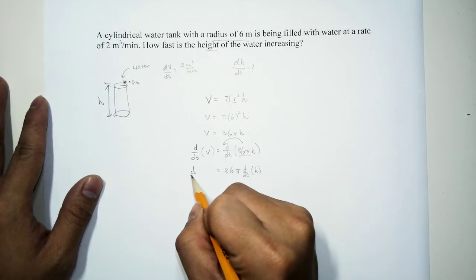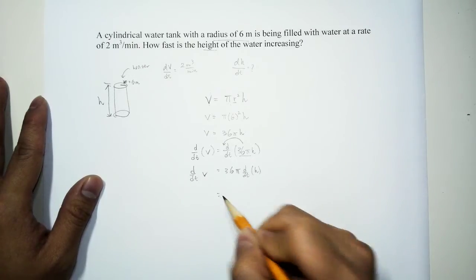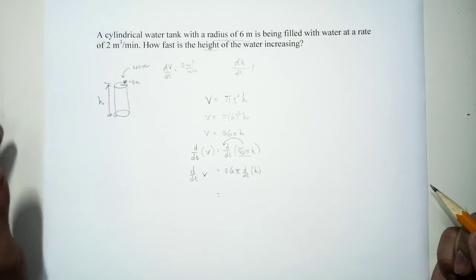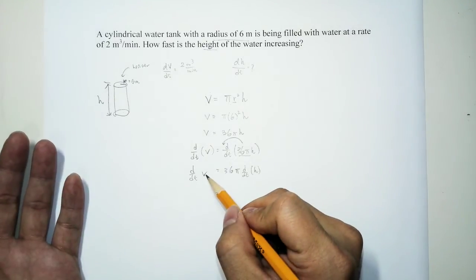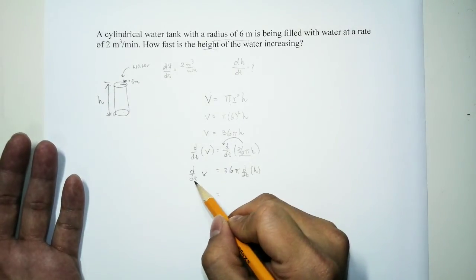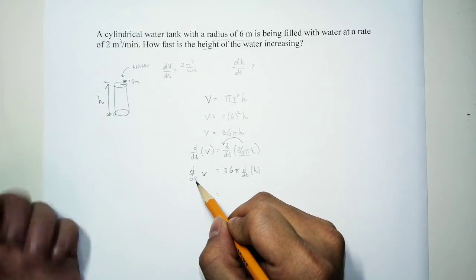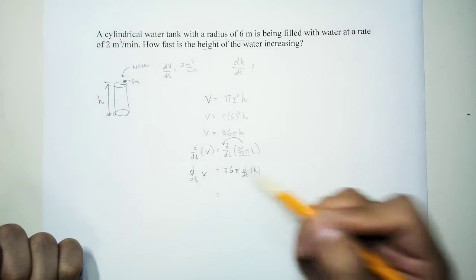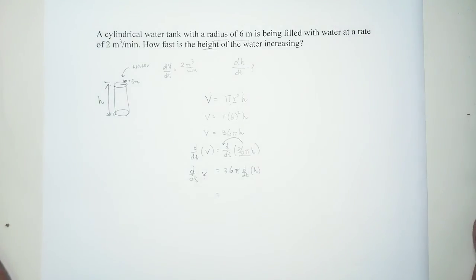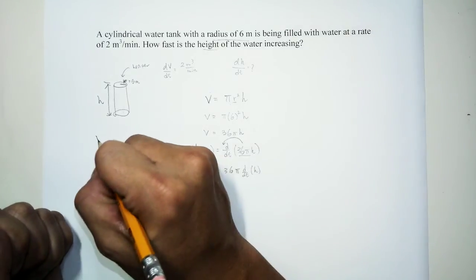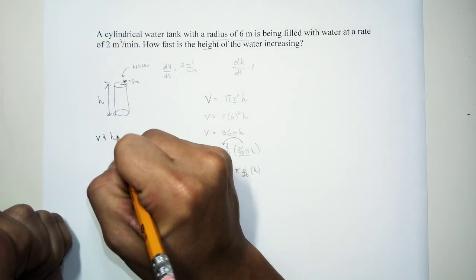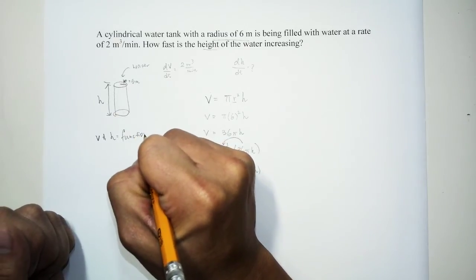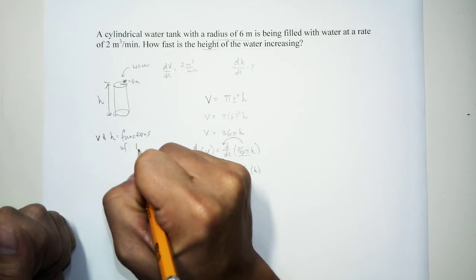And d/dt of V. Now the way we differentiate this is, well, this V is not a variable exactly because the variable that we're expecting is t. So V is really a function in terms of t. So V and h, they are functions of t.